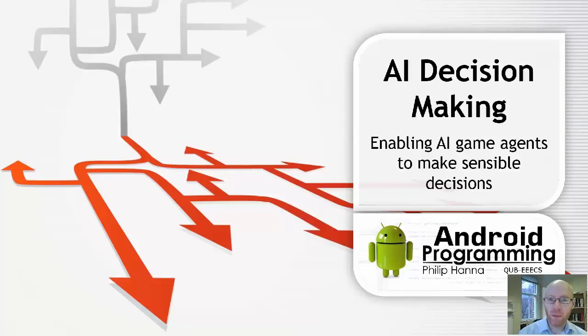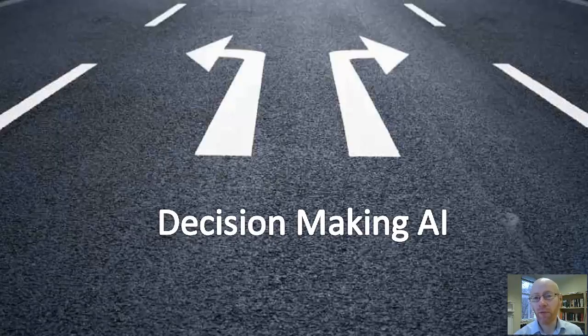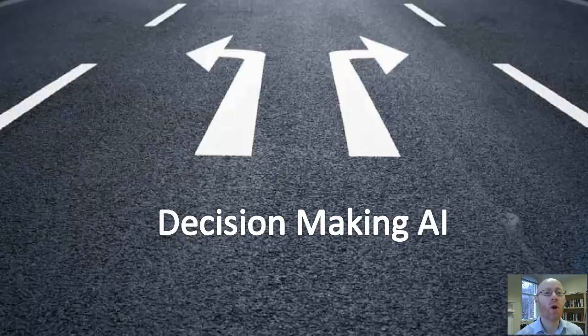In this video we're going to look at a few different forms of decision-making which we can use to provide an AI controlled entity with the ability to choose between the actions that it has available to it. Decision-making AI is really key to a lot of forms of individual control within games where we pass it over to an autonomous agent.